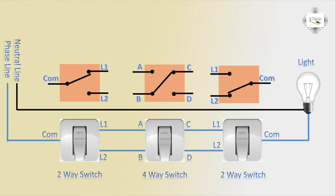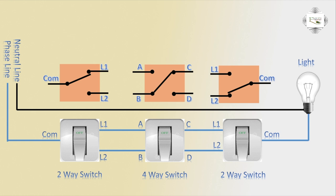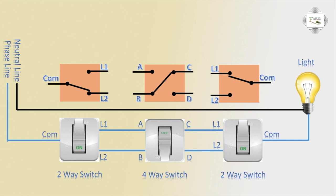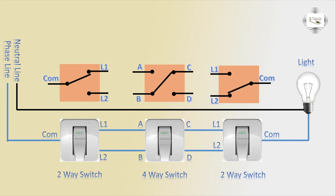The middle position uses a 4-way switch. When the middle switch is on, the light turns on. When the middle switch is off, the light turns off. Toggling the end switches also controls the light: switch on gives light on, switch off gives light off.